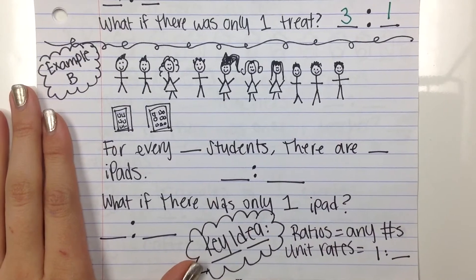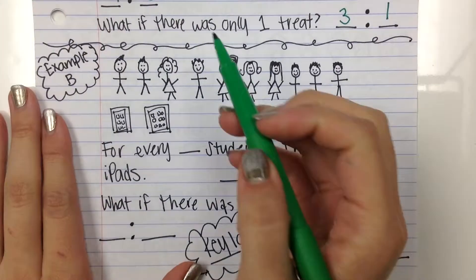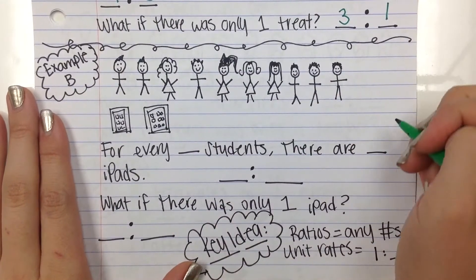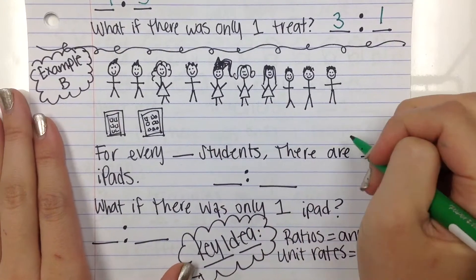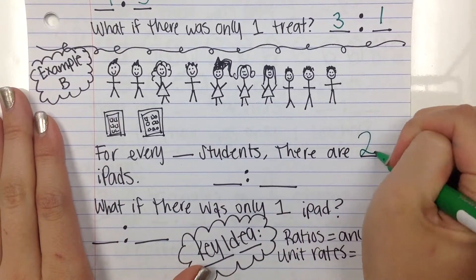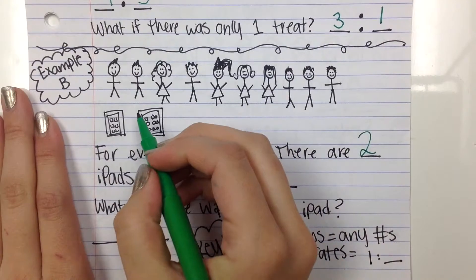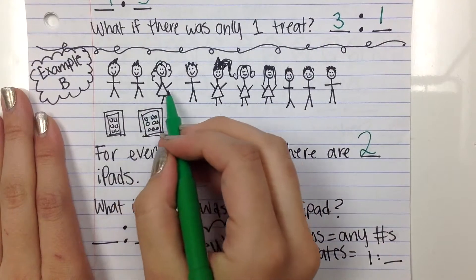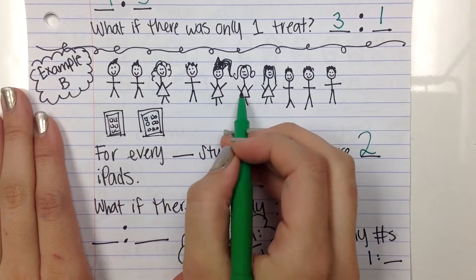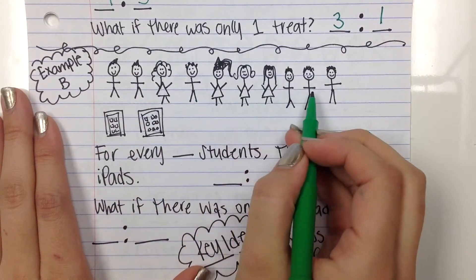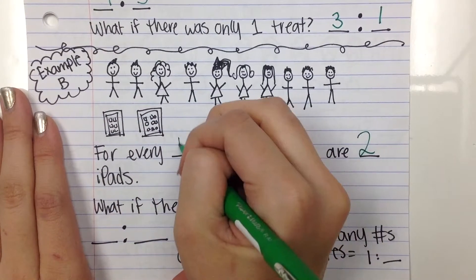Alright, so I see two iPads, and I see one, two, three, four, five, six, seven, eight, nine, ten students.